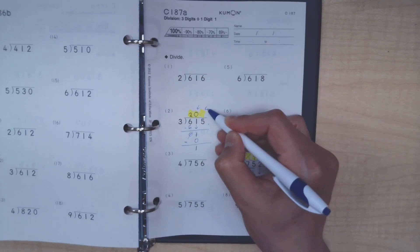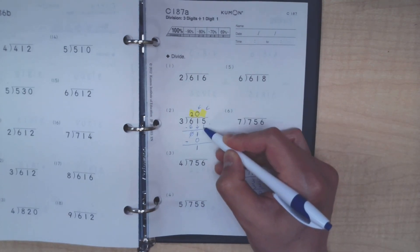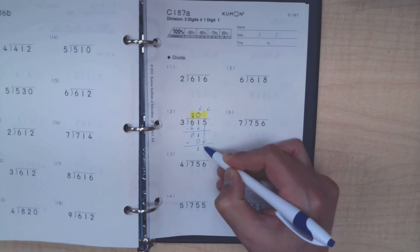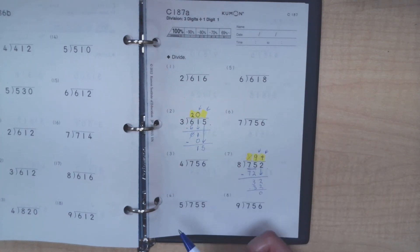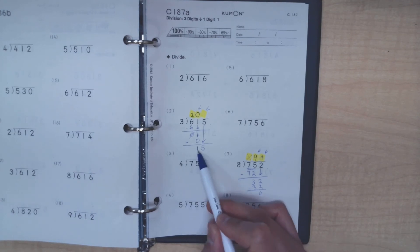For this very next spot, again, we will bring down the next number right next to this 1 to form 15. We'll ask ourselves, what's 15 divided by 3?